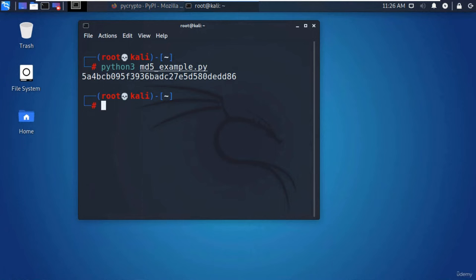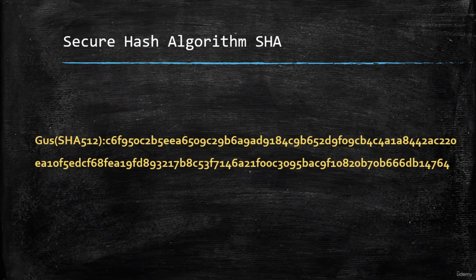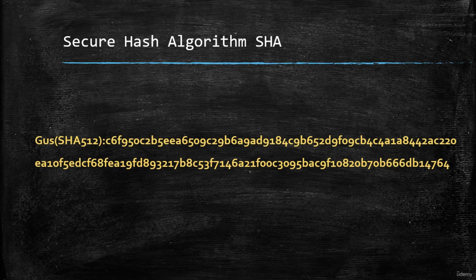I will be using the same concept in the upcoming sections. If you understood how this example works, the others will be easy. Like MD5, the Secure Hash Algorithm is another way to hash with better security. Since the output length is longer than MD5, it will take more time for the cracker to calculate its hash — Hashcat will take longer to crack a modern SHA algorithm compared to MD5.